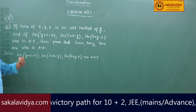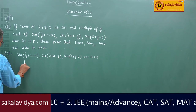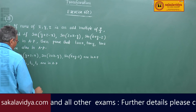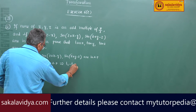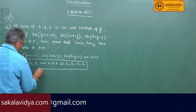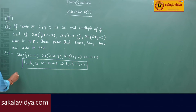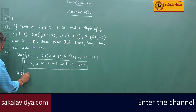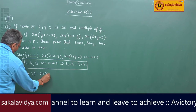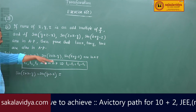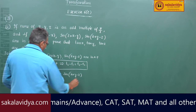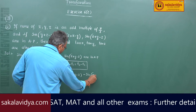In progressions, we have already studied that if t1, t2, t3 are in AP, then t2 minus t1 equals t3 minus t2 — the common differences are equal. Using this condition: sin(z+x-y) minus sin(y+z-x) equals sin(x+y-z) minus sin(z+x-y).